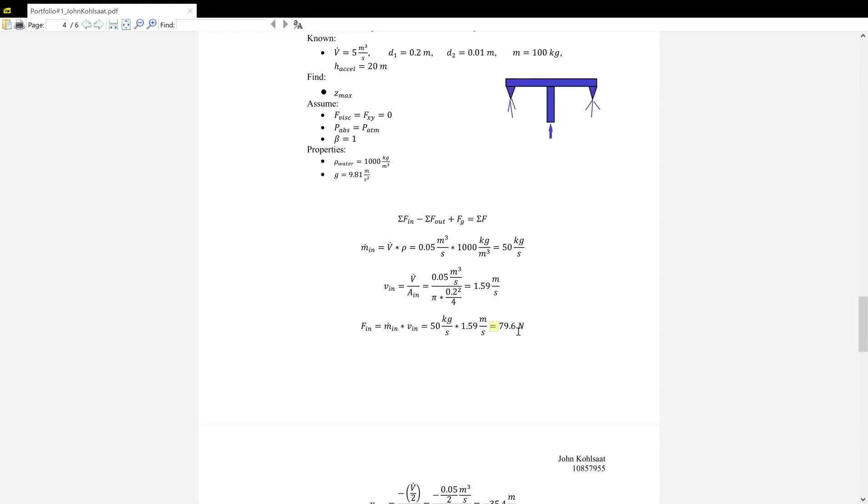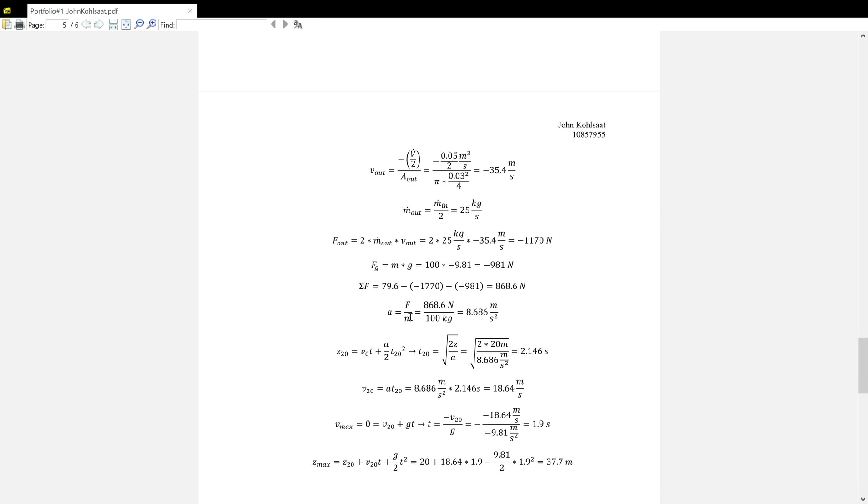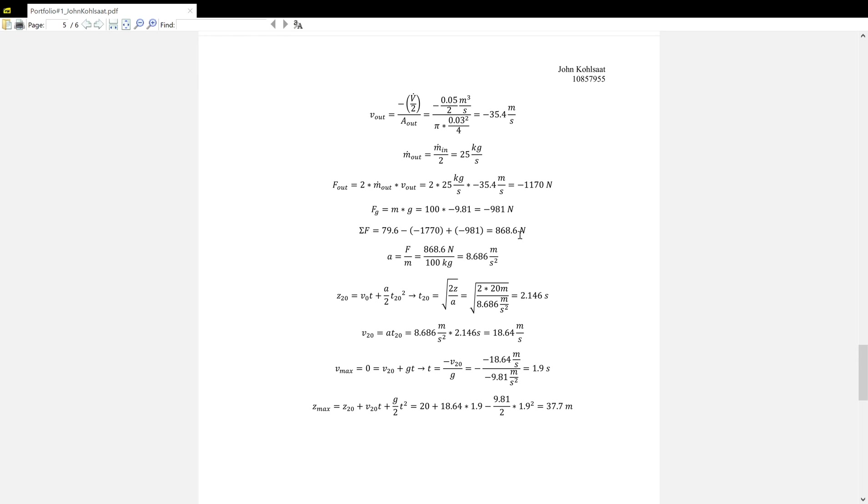We have to first find M dot in and V in to find the force in, which is 79.6 newtons. Then we have to find V out and M out to find the force out, but we divide it by two because the volumetric flow is split in two and the M out is split in two. Then we multiply it back by two because there's two different nozzles. We get a force out of negative 1,170 newtons, all in the z direction. Force gravity is obviously just mg. Then we do the sum of the forces to get 868.86 newtons. We can find acceleration from that to be 8.686 meters per second squared.